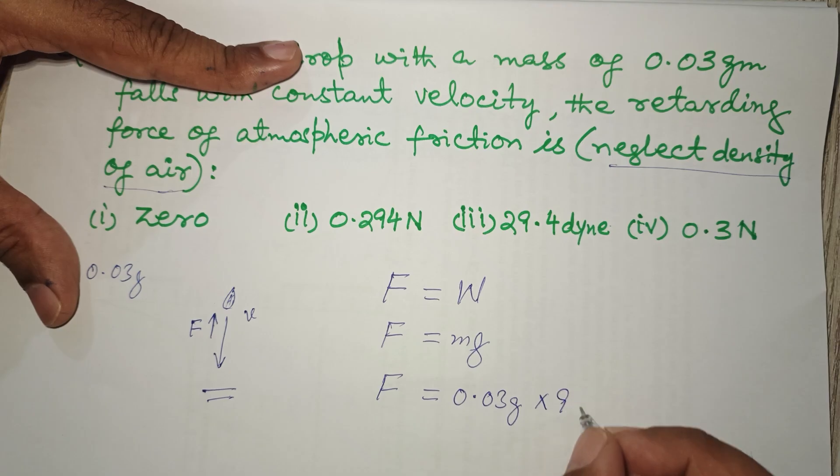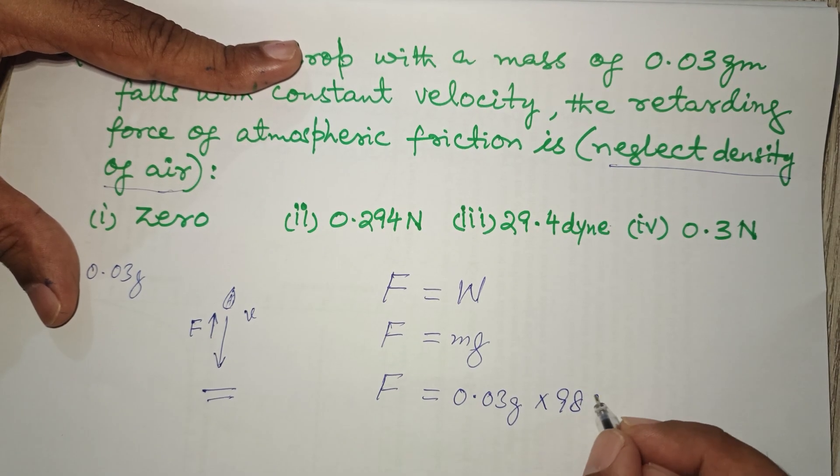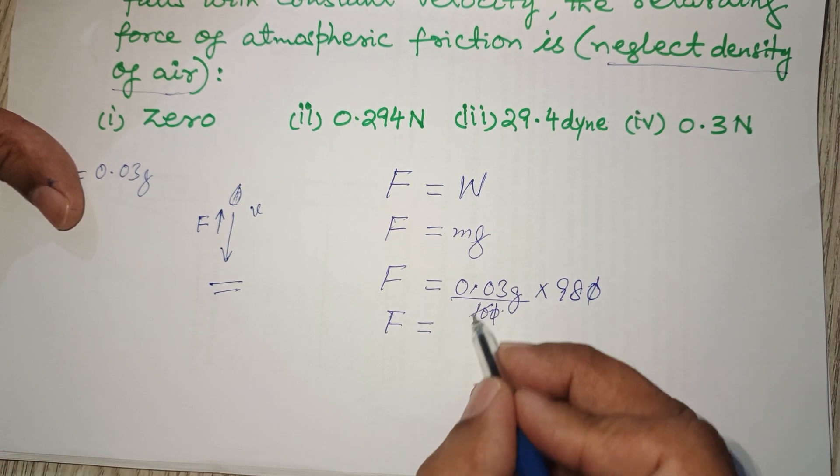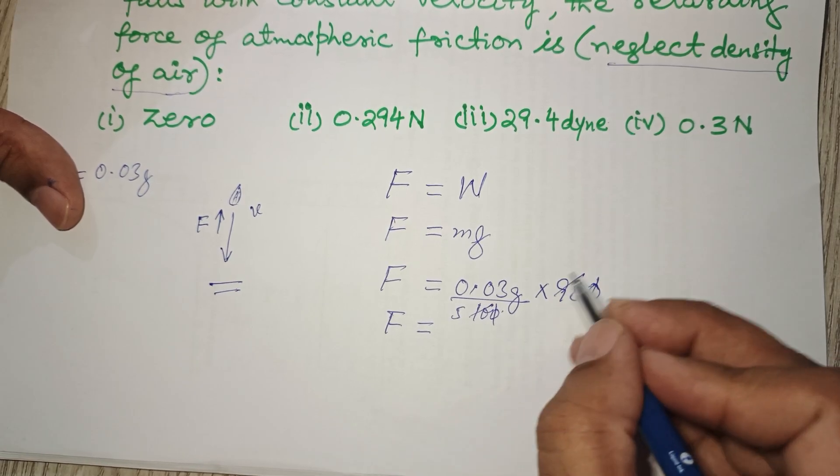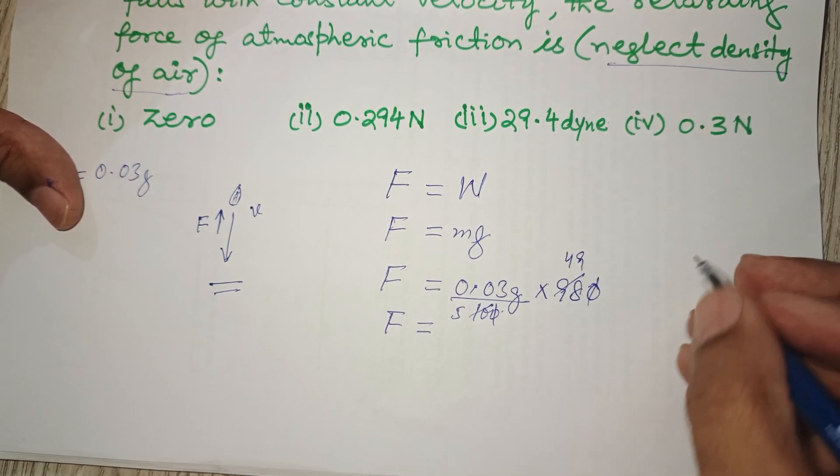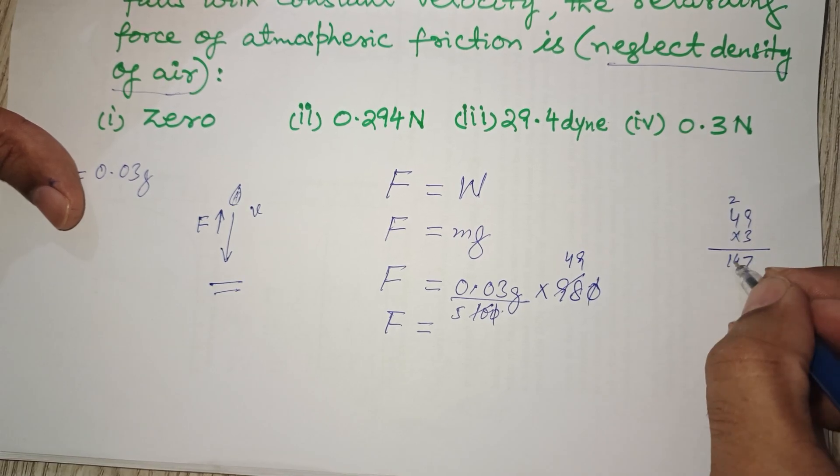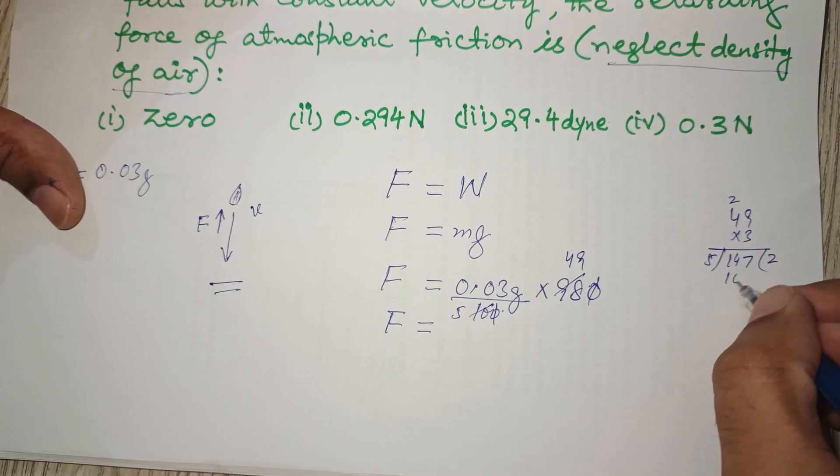Since dyne is in the CGS system, I will write over here the gravitational acceleration in CGS system which is 980. So I will get this result: point removed, 100 over here, zero cancels with zero, this is 2, 5 to 10, and this is 49. 49 into 3 is 147 divided by 5, 5 to 10.